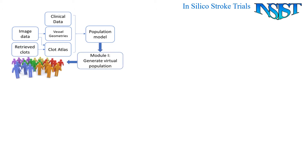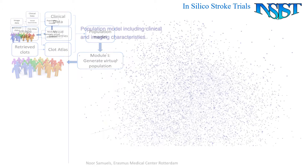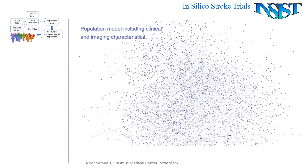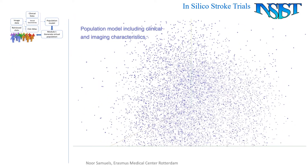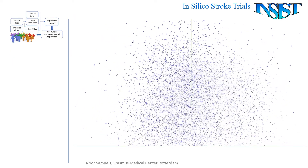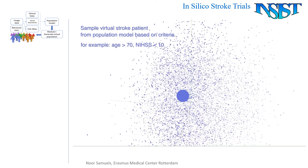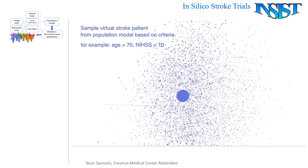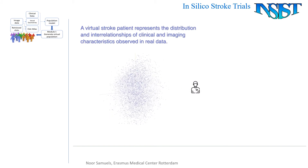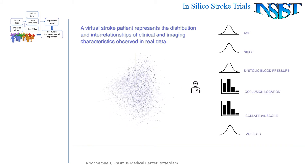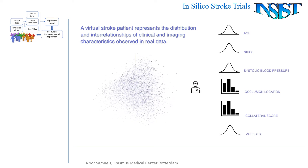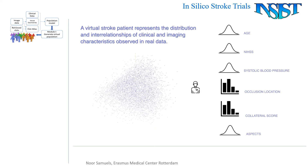Our first module generates a virtual population. Each virtual patient is based on a random selection, based on the variation and covariation of all the available patient data, covering up to 15 patient characteristics. Our virtual population can be as large as we want, but each virtual patient would still be unique.